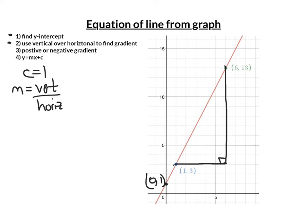So let's work out its vertical distance: 1, 2, 3, 4, 5, 6, 7, 8, 9, 10. And the horizontal distance: 1, 2, 3, 4, 5.